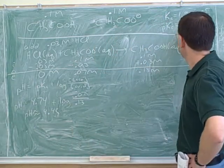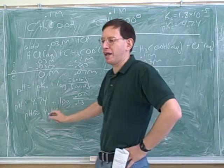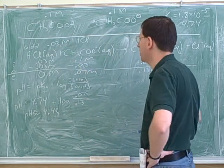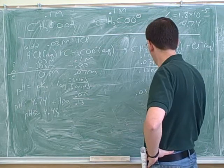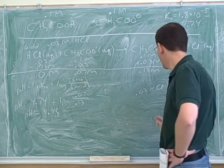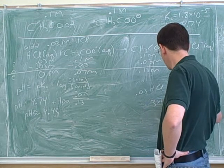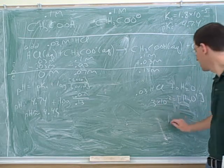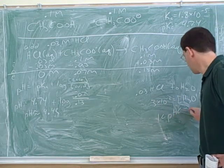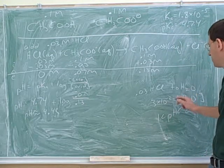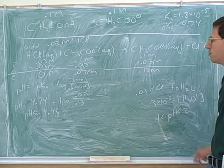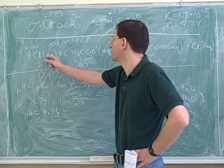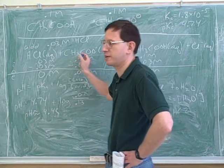The pH started at 4.74, and notice that it's barely budged — we're still in the 4 region even though we added 0.03 molar hydrochloric acid. What would have happened if you added 0.03 molar hydrochloric acid to water? That would have directly generated 3×10⁻² hydronium, and the pH would be between 1 and 2. Because we have a buffer, we haven't even gotten out of the fours. This shows that the buffer really works — the hydrochloric acid isn't producing much pH change because it's mainly getting neutralized by the base.